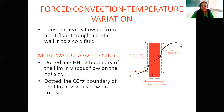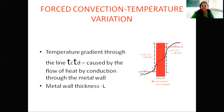This is a conducting metal wall placed between hot fluid and cold fluid. Now let's see the characteristics of this metal wall. The dotted line HH represents the boundary of the film in viscous flow on the hot side. The dotted line CC represents the boundary of the film in viscous flow on the cold fluid side. The temperature gradient through the line TC–TD is caused by the flow of heat by conduction through the metal wall, which has a thickness of L meters.